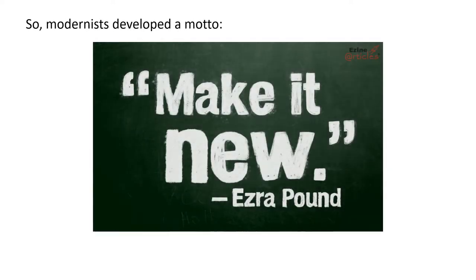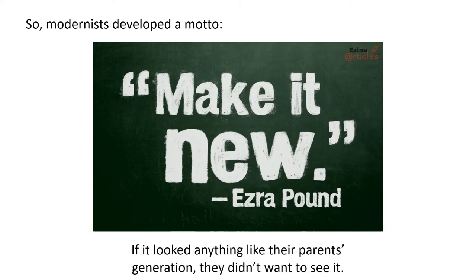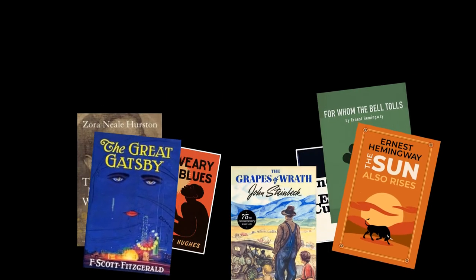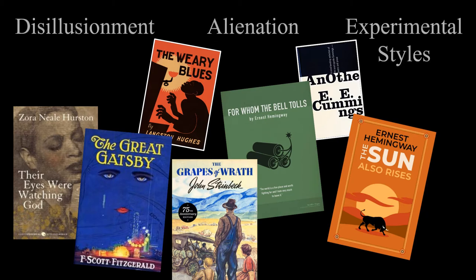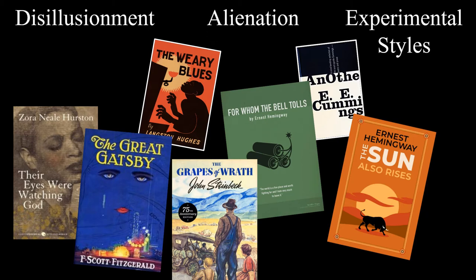Modernists developed a motto: 'Make it new.' If it looked anything like their parents' generation, they didn't want to see it. All of these changes brought about a variety of art, and yet there are elements and themes that string them together — namely, disillusionment, alienation, and experimental styles.